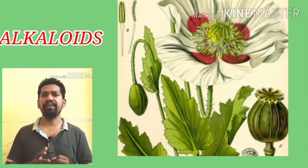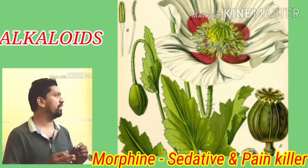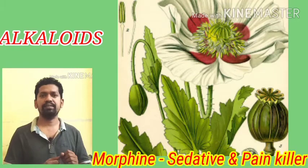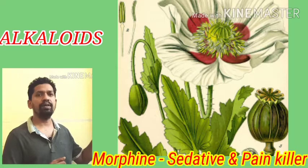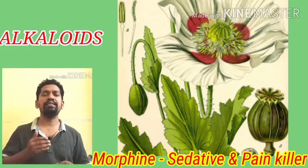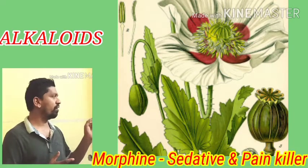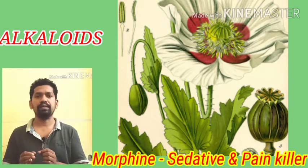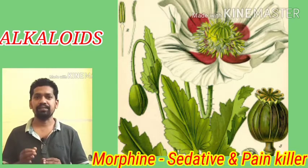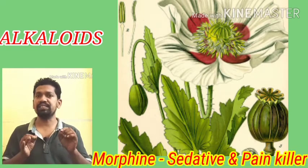The next alkaloid is morphine. Morphine is an alkaloid given by the fruits of Papaver somniferum. It is used as a sedative as well as a painkiller.